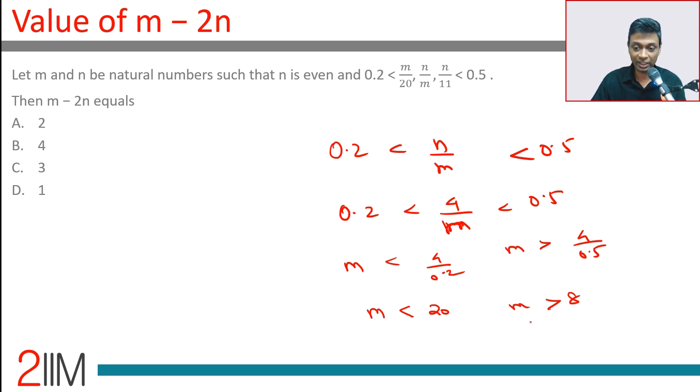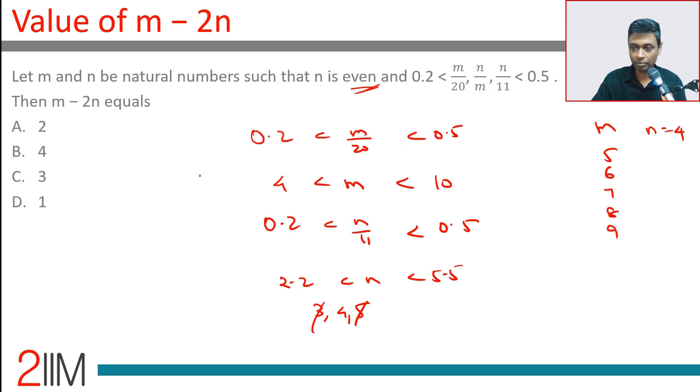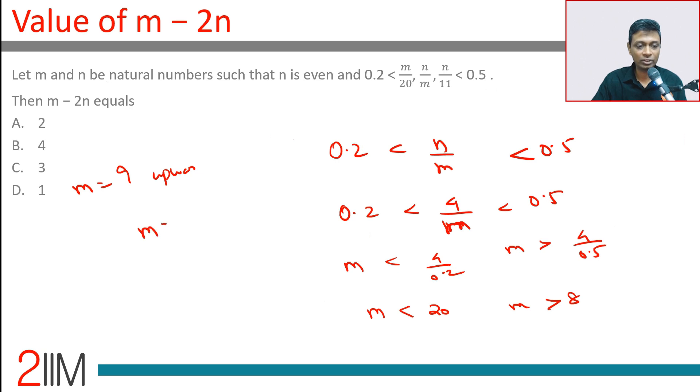20 downwards. M can take only 5, 6, 7, 8, 9. Wait - m equals only 9. No other value is possible. N is 4. M - 2n = 9 - 2 × 4 = 9 - 8 = 1.